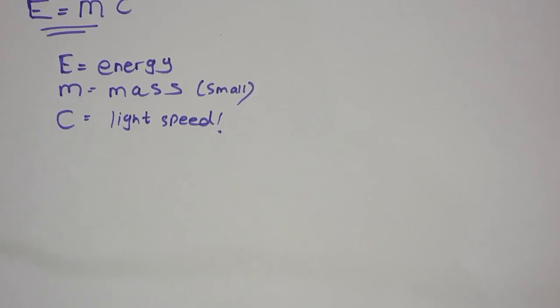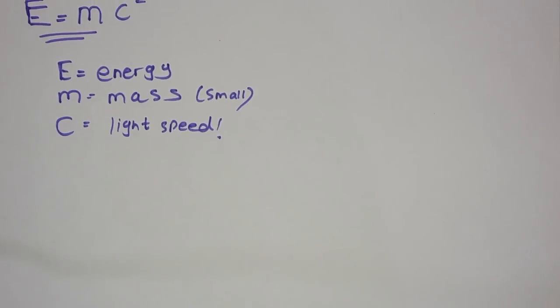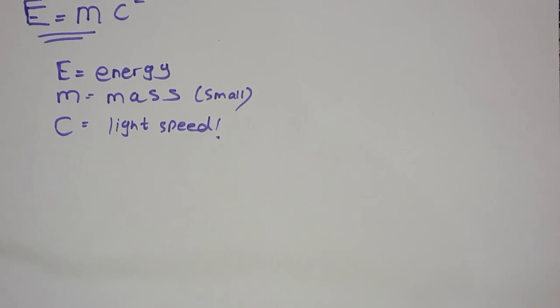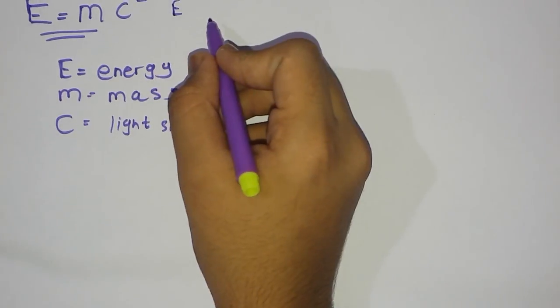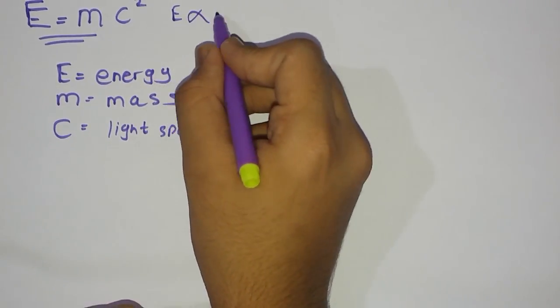First let me explain you what actually is E equals M C squared. Just for definition's sake, we can say that E equals to M C squared is actually just an energy-mass relationship. Simply we can say E is equal to M C squared tells us that actually energy is directly proportional to mass.